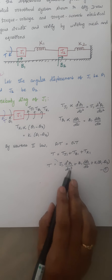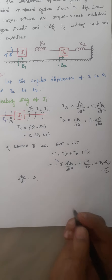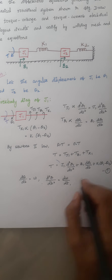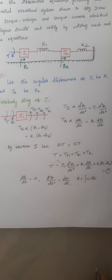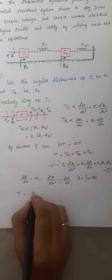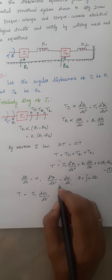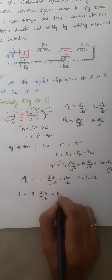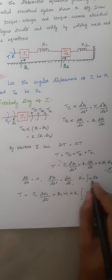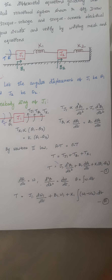Now rewriting this angular displacement in terms of angular velocity: dθ/dt is represented as ω, d²θ/dt² as dω/dt, and θ as the integral of ω dt. Substituting these values, equation A becomes: T = J1 · dω1/dt + B1 · ω1 + K1 · ∫(ω1 − ω2) dt.